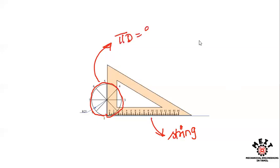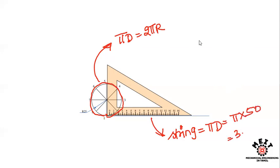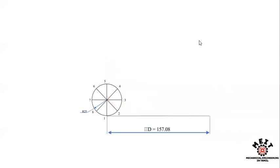What length does the string make for a circle? If your circle completes one full revolution, the string length is the full circumference: π into 50, that is 3.14 into 50mm. So that is your length value — 157.8mm.